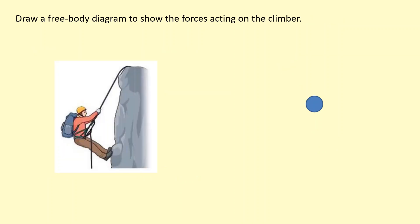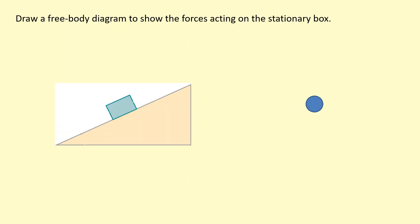Here we have more forces at an angle. The tension acts along the rope, the weight acts towards the centre of the planet mg, and the person is pushing away from the wall. If we assume he pushes at 90 degrees from the wall, we can draw the normal reaction force acting away from the wall. This is a common question that's asked.